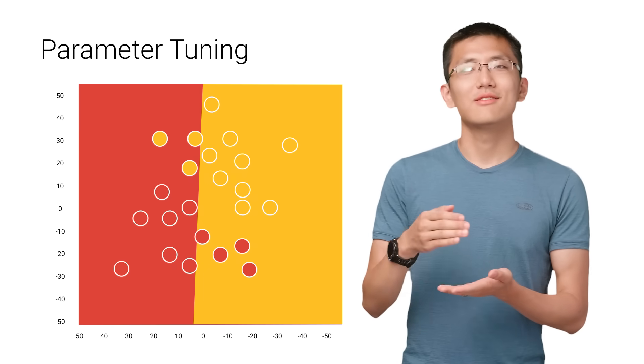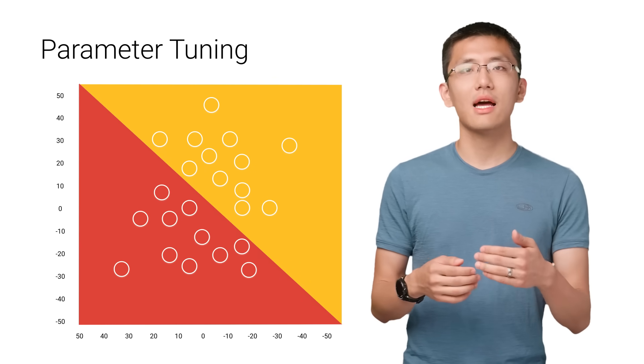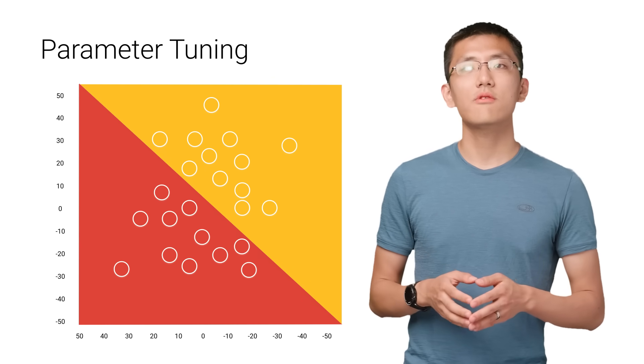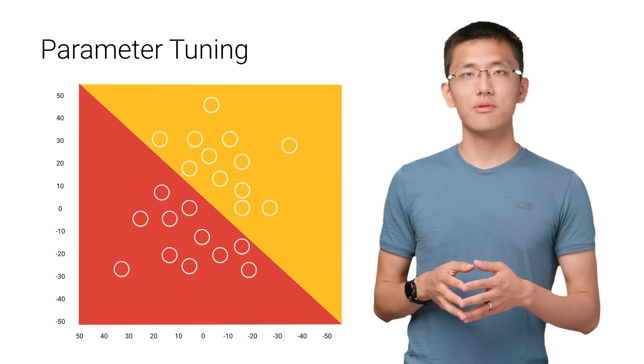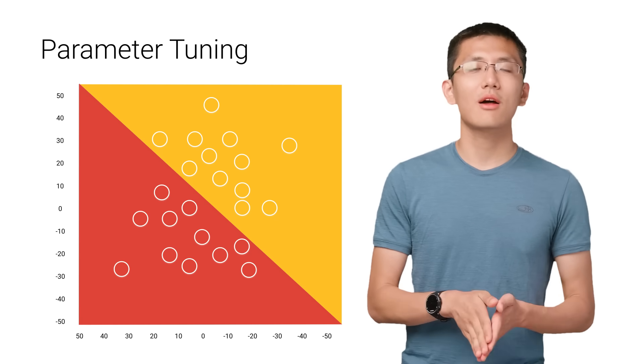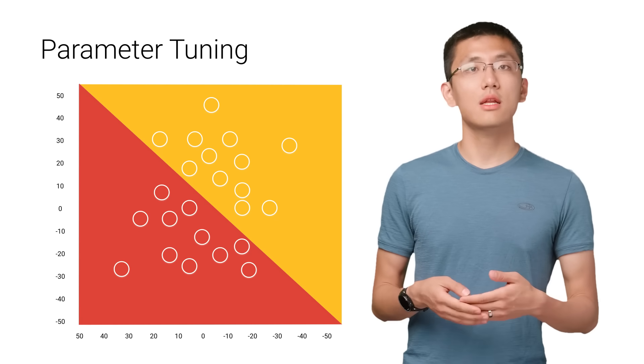Another parameter is learning rate. This defines how far we shift the line during each step based on the information from the previous training step. These values all play a role in how accurate our model can become and how long the training takes.